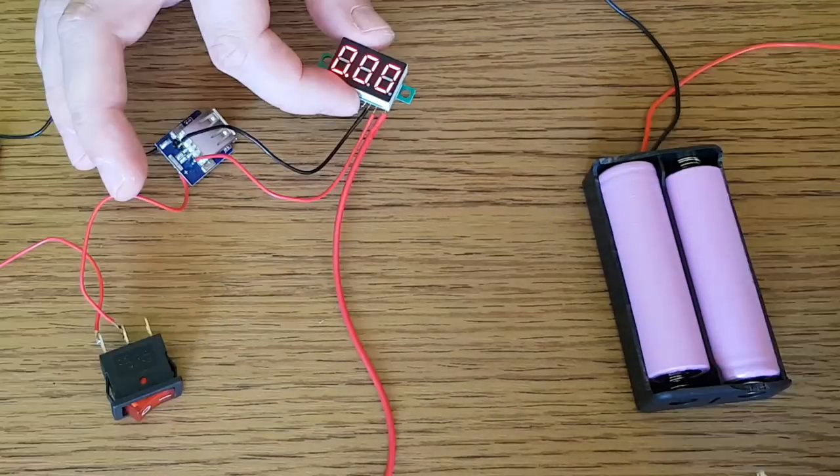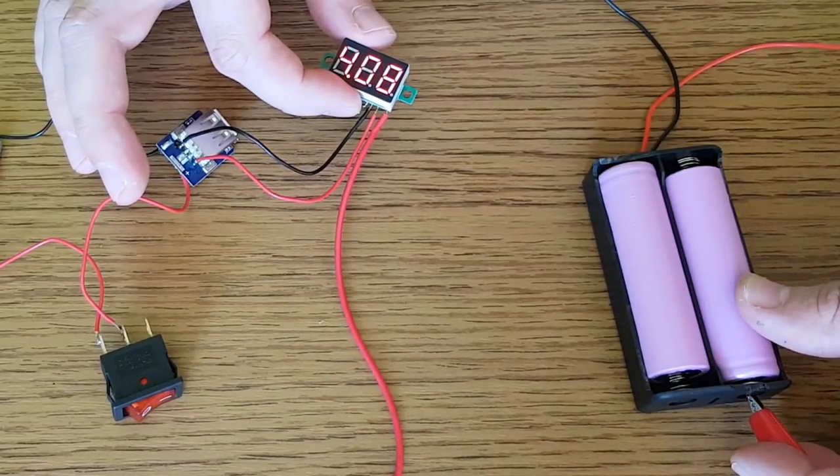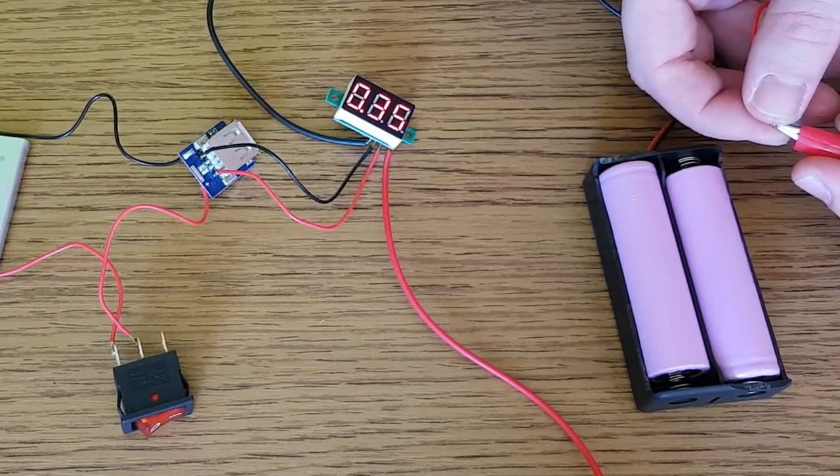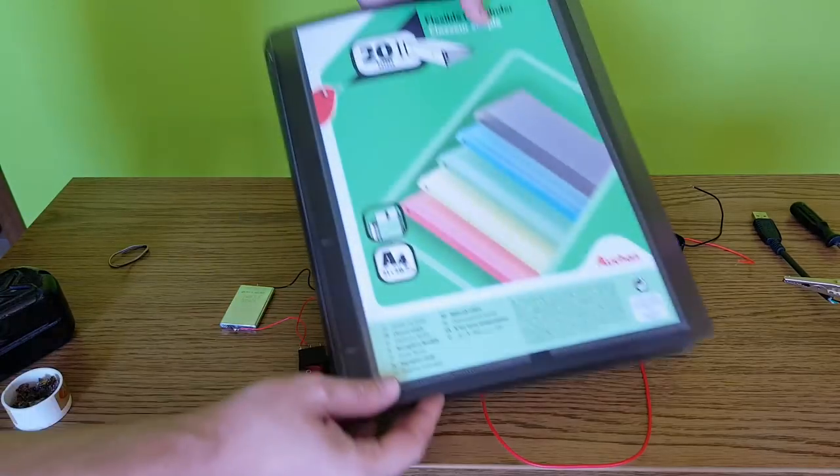By now, you've probably noticed the biggest problem with this little panel voltmeter. If the ambient light is too bright, you can't see the numbers on it. But don't you worry guys, I have a solution for you.